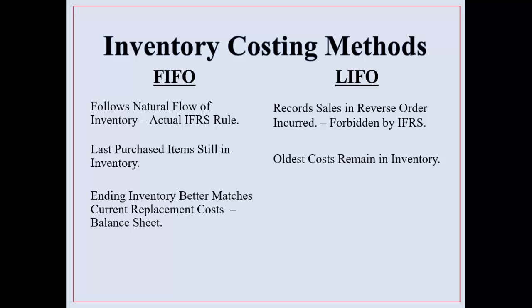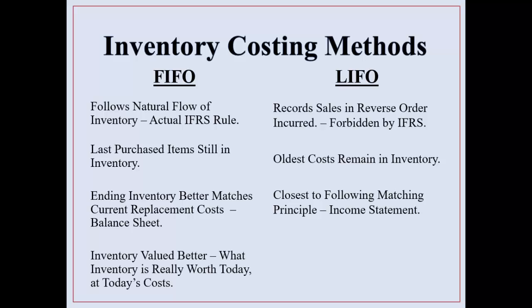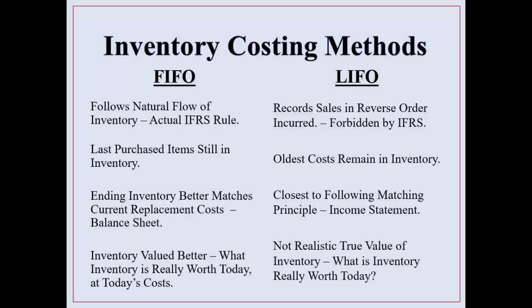With FIFO, because of that, the ending inventory better matches current replacement costs on your balance sheet. With LIFO, this is really thought to be closest to following the matching principle — what is on the income statement as cost of goods sold better matches today's cost. With FIFO, inventory is thought to have a better valuation of what it's worth today. LIFO is not really realistic of the true value of inventory, while cost of goods sold best follows the matching principle, but what remains in ending inventory is not always valued correctly.